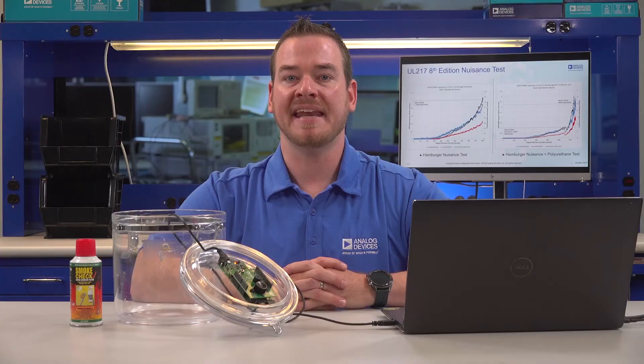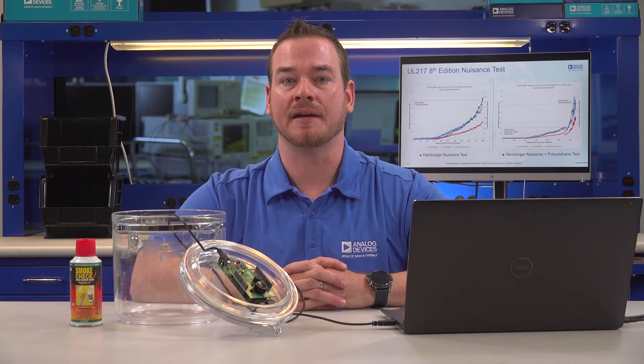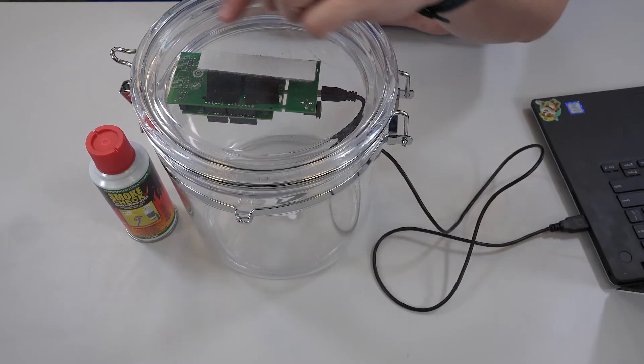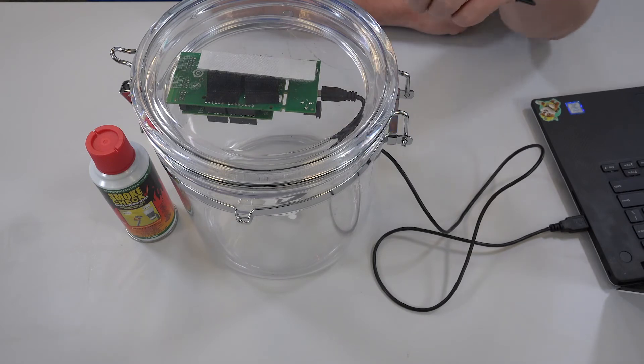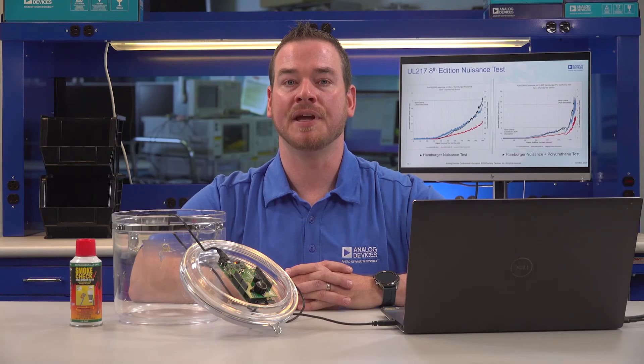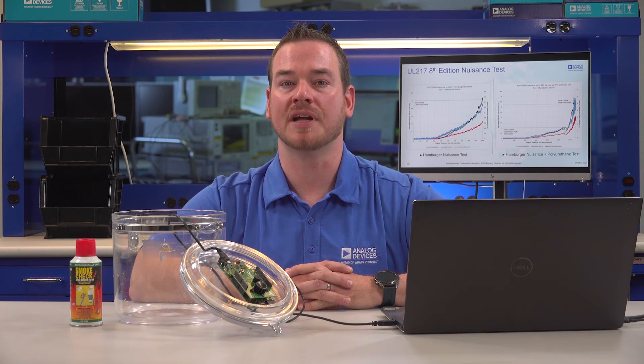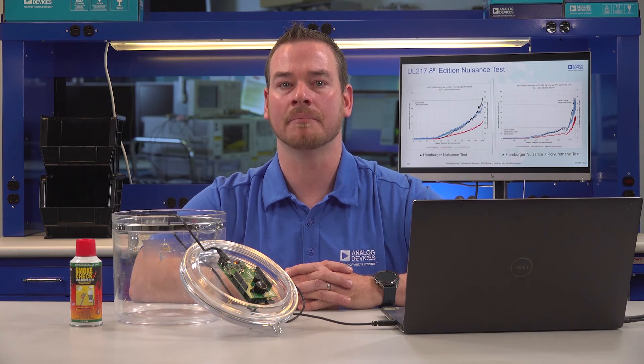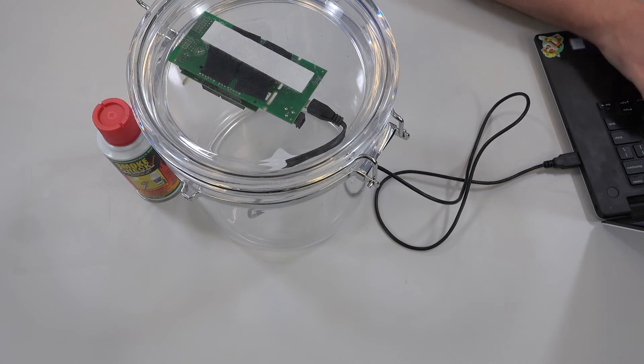The ADICUP3029 has already been programmed with the UL217 application software, so I'll be gathering some data using the USB cable connected to my PC to take measurements from our container. This way you can see as we introduce more smoke inside the container, the values will rise, triggering the smoke detector algorithm and sounding the alarm. First, let me communicate to the board via serial connection.